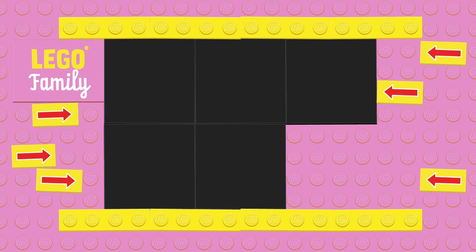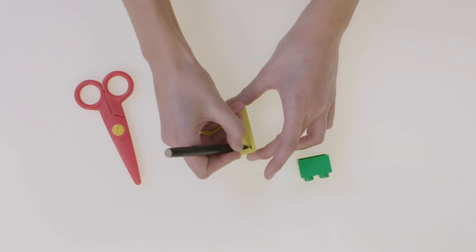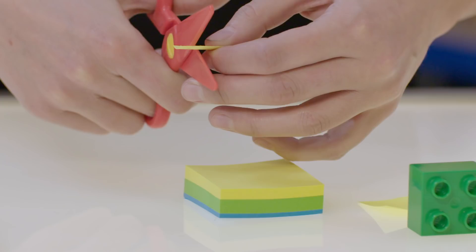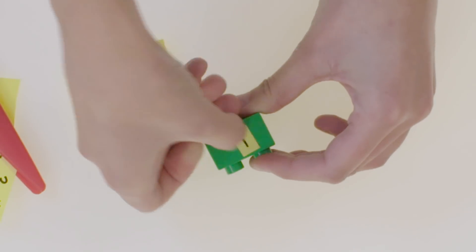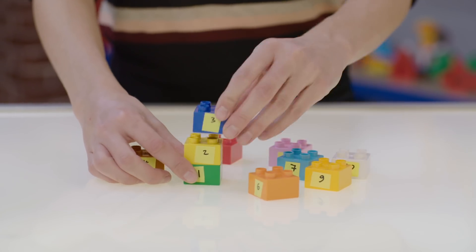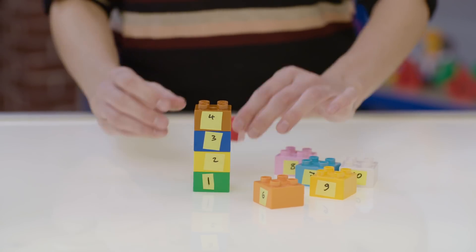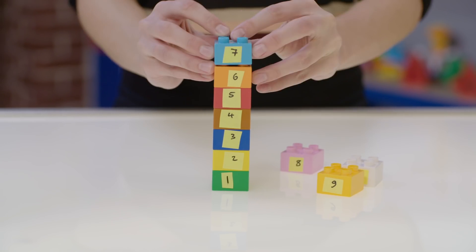Number Tower. Post-it notes are a really easy way to make stick-on numbers for your LEGO Duplo Bricks. Once you've added numbers to the bricks, your child can use them to build a tower, helping them to learn number sequences and counting.